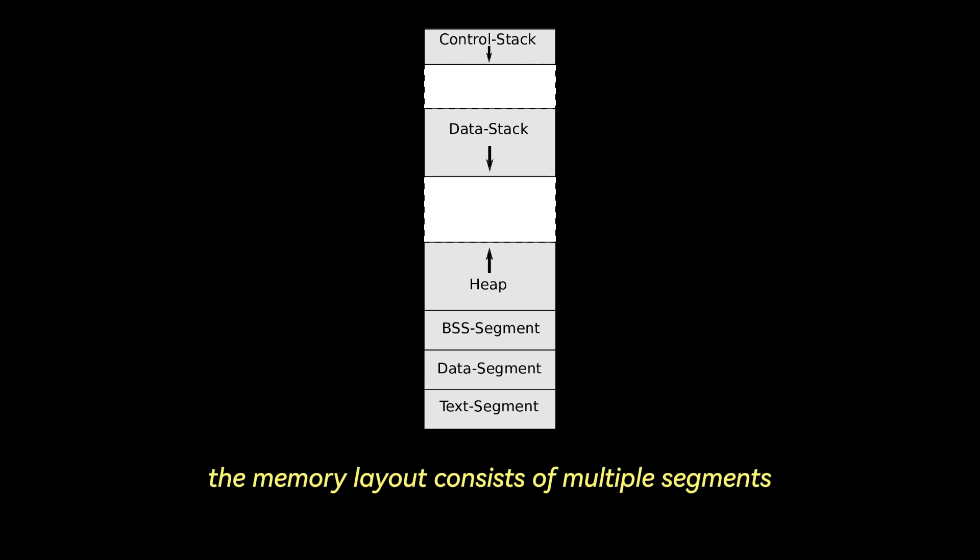How about the memory layout of a stack versus a heap? In a typical program, the memory layout consists of multiple segments. The text segment stores compiled code and is read-only. The data segment contains global and static variables. The heap is used for dynamic memory allocation, and the stack holds local variables and function call information.